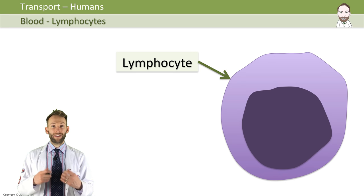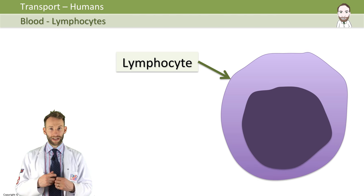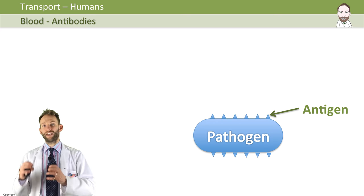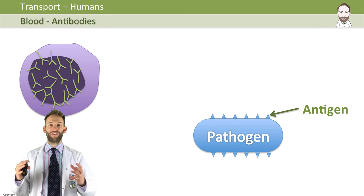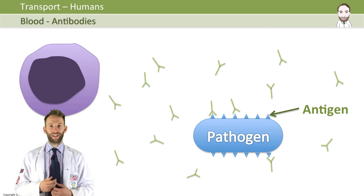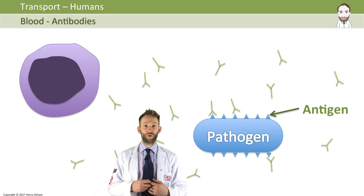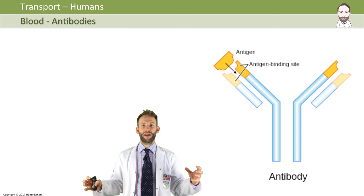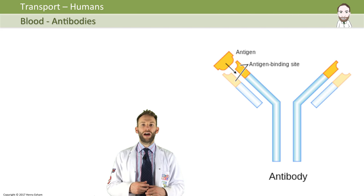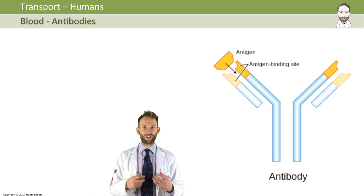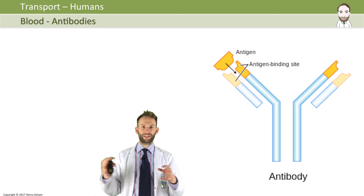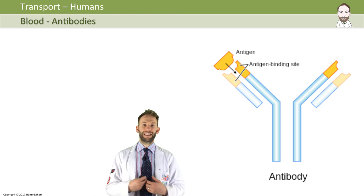Lymphocytes are a bit different — only about 25% of our white blood cells are lymphocytes. Their function is to produce things called antibodies. Pathogens have little markers on the surface of their membranes called antigens, and antibodies can stick to antigens and therefore make the pathogen harmless, and then it can be destroyed. They can stop pathogens in a number of ways: they can cause the bacteria to burst, cause bacteria to stick together and clump so phagocytes can find and engulf them more easily, or they can neutralize toxins being produced by the pathogens. So with a combination of antibody production from lymphocytes and phagocytes engulfing pathogens, it protects us and keeps us healthy.